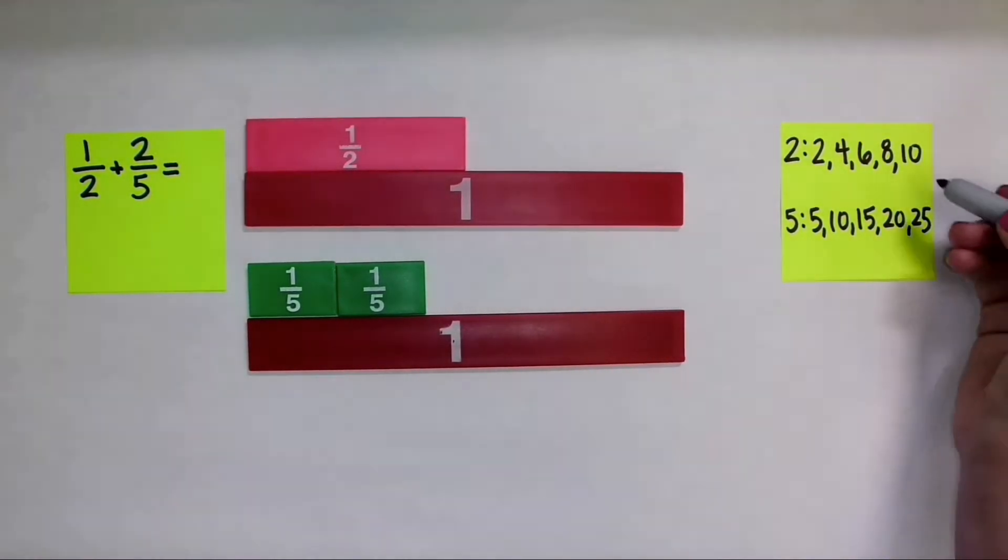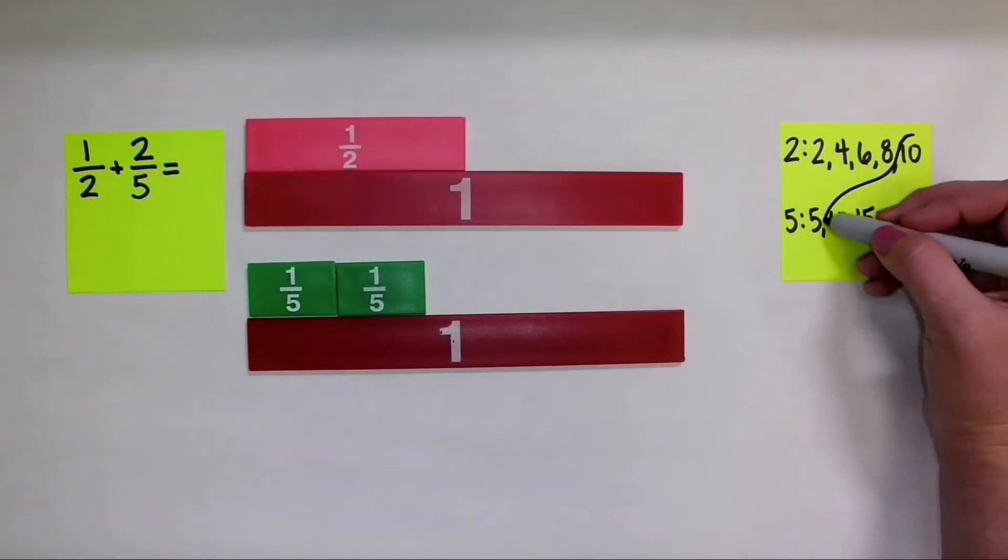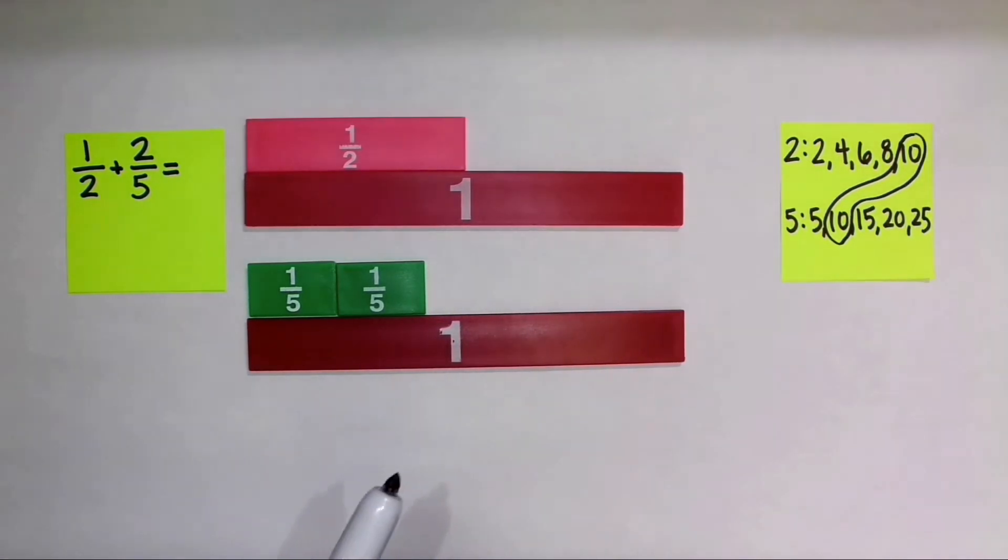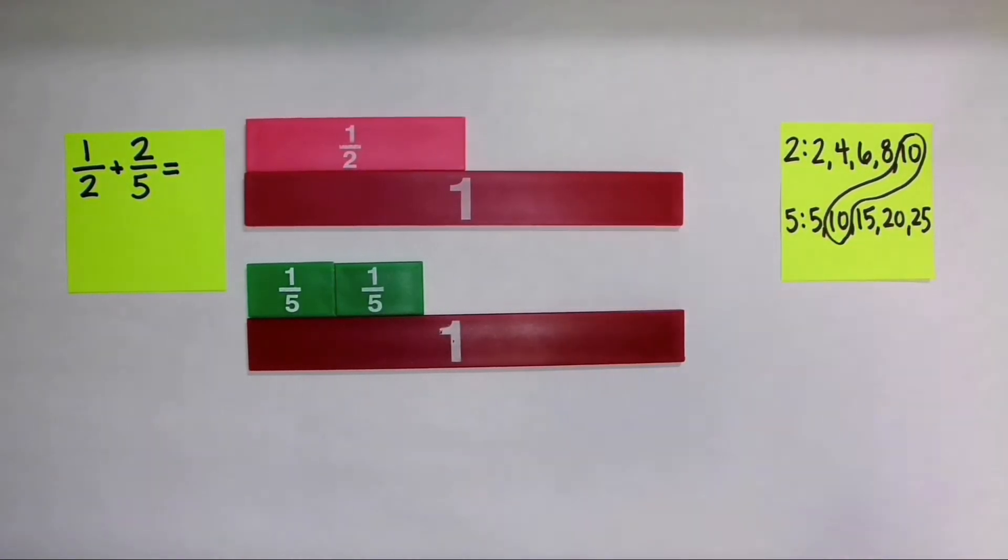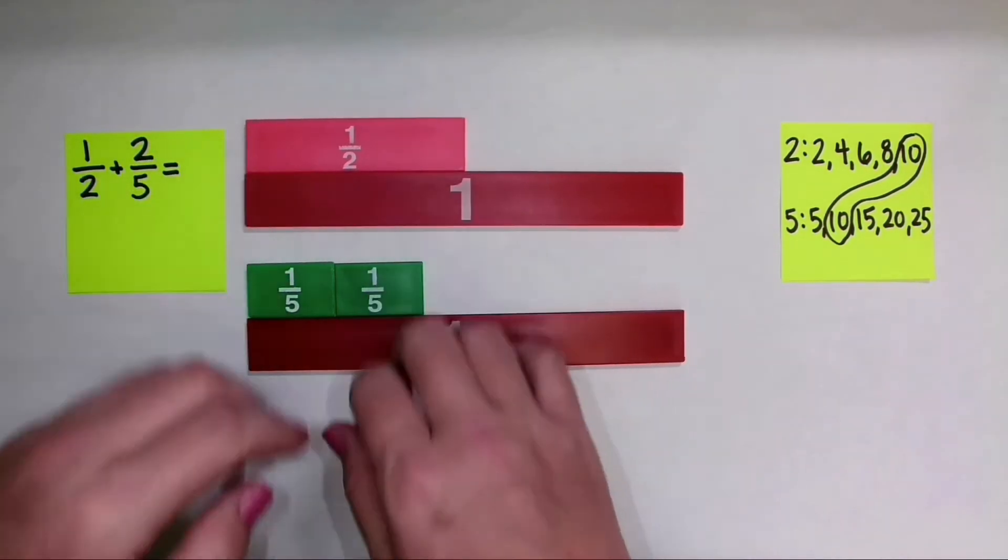All right. So let's see. Do I have a least common denominator? I do. I see that 10 is the least common denominator when I have a fraction with a denominator of 2 and a fraction with a denominator of 5. So that means I need to find equivalent forms of each of these fractions.